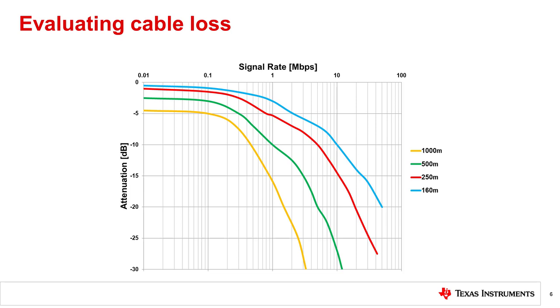A good rule of thumb is that the insertion loss should be less than about 6 to 8 decibels at the Nyquist frequency, which is equal to the data rate divided by 2, for example 500 kilohertz for a 1 megabits per second signal.